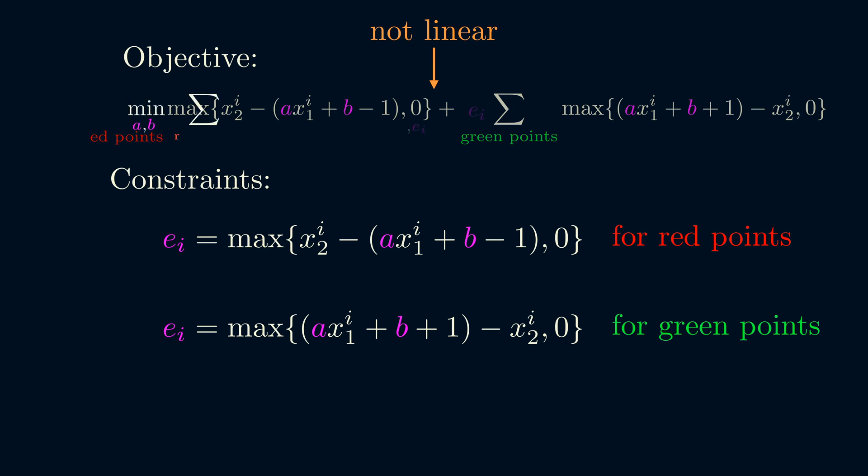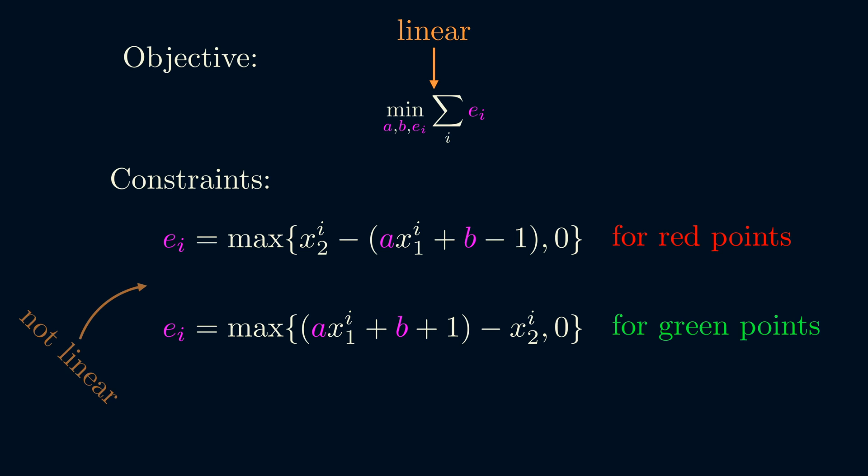We can introduce a variable ei for each point we have and set this equal to the loss. Then we replace the objective to be the sum of ei. So now the objective is linear, but the constraints are now non-linear.